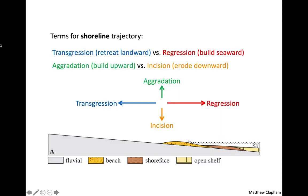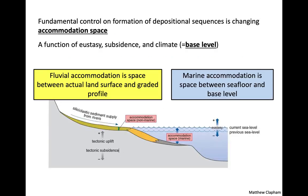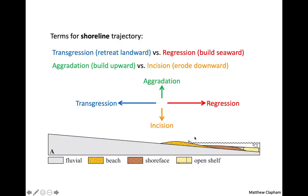Here are some key terms. Aggradation is building upward. Incision is eroding downward. We care about this because things erode to base level — rivers erode to base level. If sea level falls and retreats, rivers will continue to erode out to meet that base level. That's why understanding base level is so important.